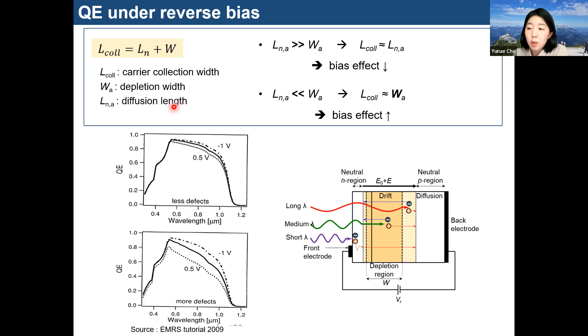First of all, carrier collection length is composed by diffusion length and depletion width. When we apply the bias, the depletion width changes. So if QE changes a lot when we apply the bias, it can be thought that the overall collection width is mainly affected by the depletion width.